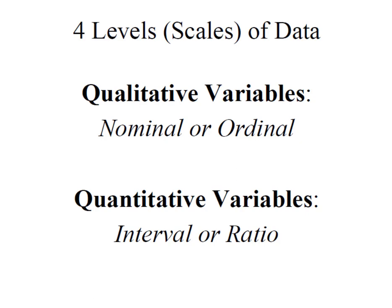Data is generally classified into four levels, or on a scale of four types. For qualitative variables, data will either be nominal or ordinal. When we have quantitative variables, that will be either interval or ratio level data. Let's take a look at what each one of these levels looks like.